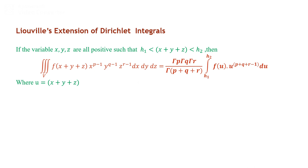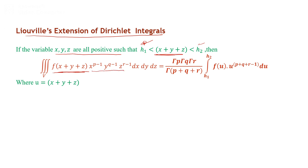The Liouville extension of the Dirichlet integral: suppose x, y, z are all positive and x + y + z lies between two constants h1 and h2. For a function f(x+y+z) multiplied by x^(p-1) y^(q-1) z^(r-1), the triple integral equals gamma(p)*gamma(q)*gamma(r) / gamma(p+q+r) times the integral from h1 to h2 of f(u) * u^(p+q+r-1) du, where u = x + y + z.